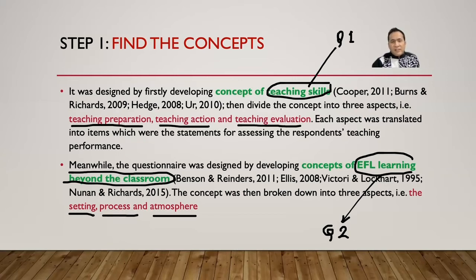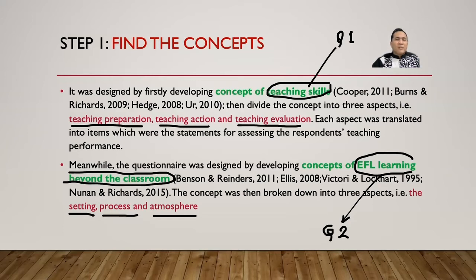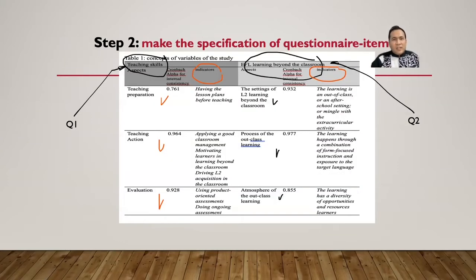For the second questionnaire on EFL learning beyond the class, you read Benson, Ellis, Victori, Nunan, and others. After reading, you define the variable and get three aspects: setting, process, and atmosphere. From each aspect, you take some items for your questionnaire.